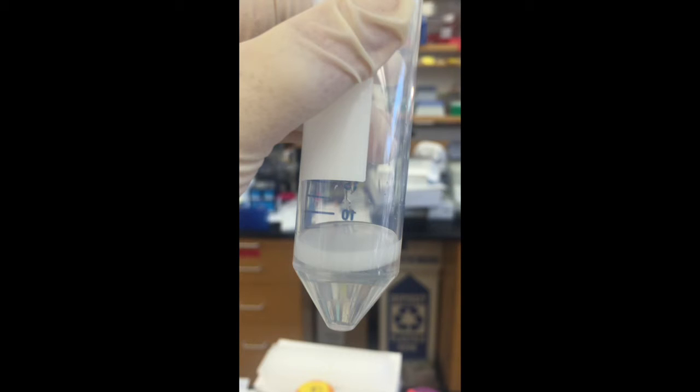What this does is it allows you to watch the wall of droplets run back down the side of the falcon tube and it's really the best check for uniformity of droplet size.